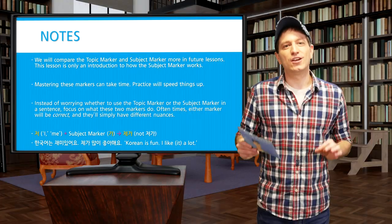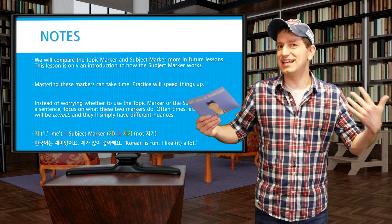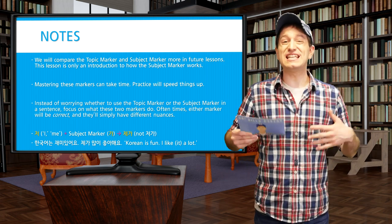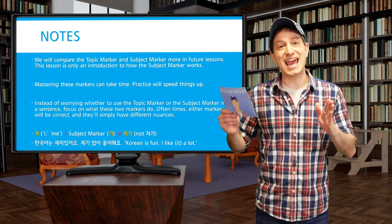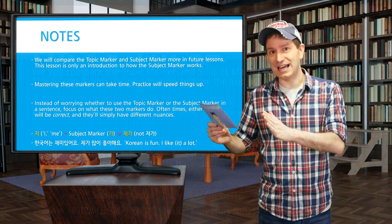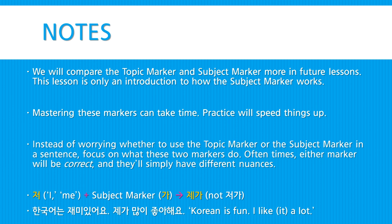One more note: whenever you have 저, meaning 'I' or 'me,' combined with the subject marker 가, you get 제가. For example: 한국어는 재밌어요 — 'Korean is fun, as for Korean, it's fun.' 제가 많이 좋아해요 — 'I like it a lot.'